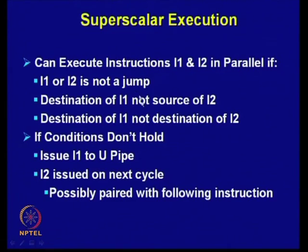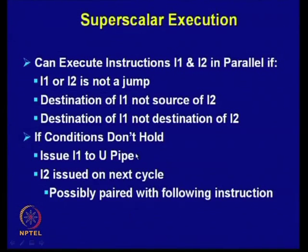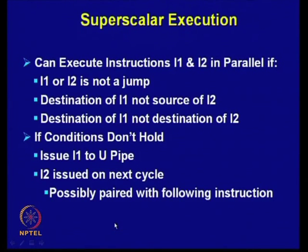If these conditions are not satisfied, then only I1 is issued to U-pipe and I2 is issued on the next cycle — it must be done serially. The next instruction 2 can then be paired with following instructions. This is how superscalar execution takes place in the Pentium processor.